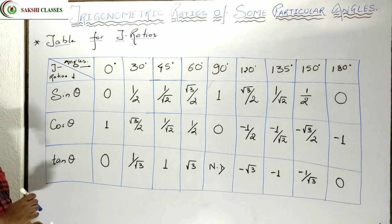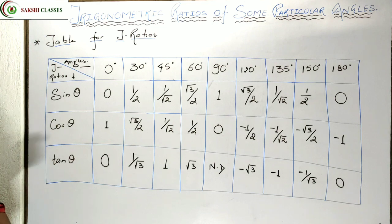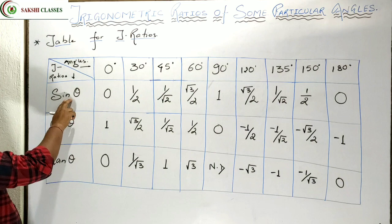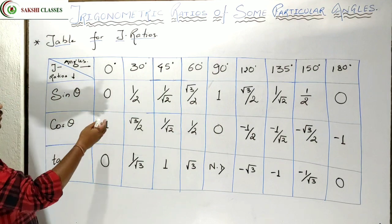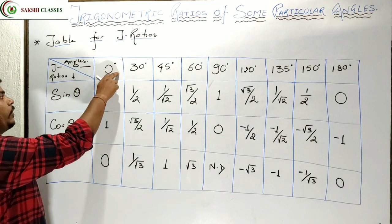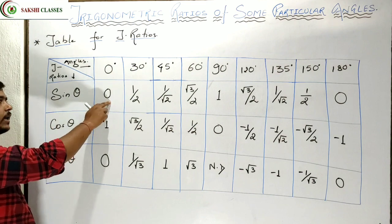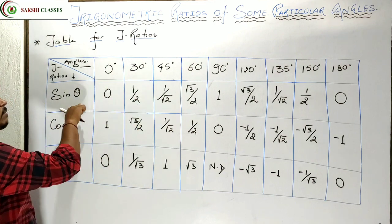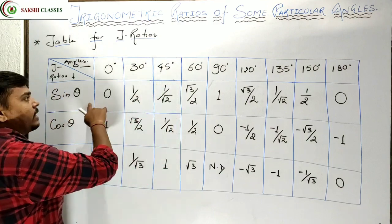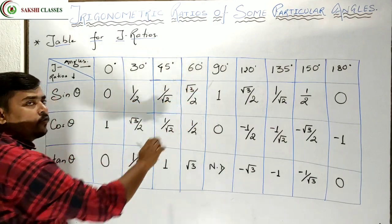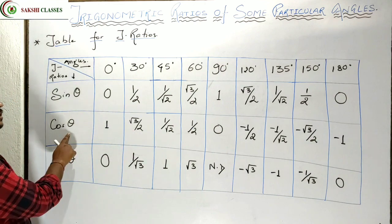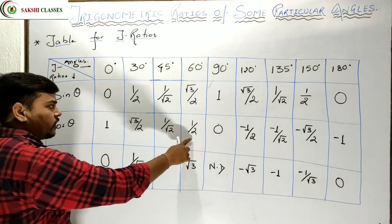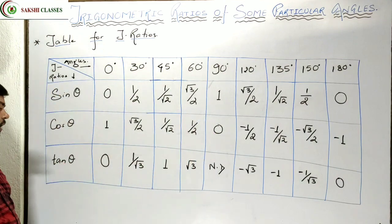So this is the trigonometric ratio table. The value of sin 0° is 0, sin 30° is 1/2, sin 45° is 1/√2, sin 60° is √3/2, sin 90° is 1. Similarly, cos 0° is 1, cos 30° is √3/2, cos 45° is 1/√2, cos 60° is 1/2, cos 90° is 0.